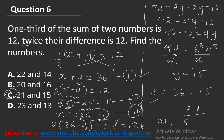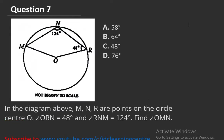Question number 7: In the diagram, M and N are points on the circle with centre O. Angle ORN equals 48 degrees and angle RNM equals 124 degrees. Find angle OMN.